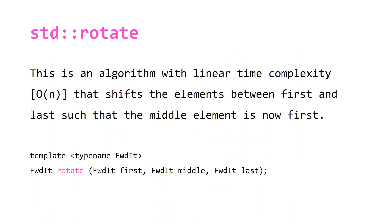For std::rotate, this is an algorithm with linear time complexity that shifts the elements between first and last such that the middle element is now first. So this function takes three parameters: first, last, and also middle, and what it's going to do is it's going to rotate these elements such that middle is now the first element.